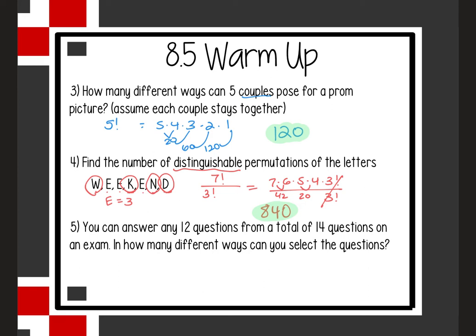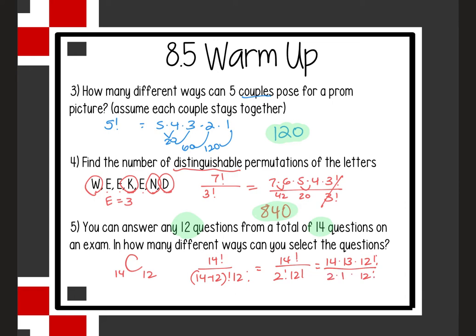Number 5 says: you can answer any 12 questions from a total of 14 questions on an exam. How many different ways can you select the questions? The wording says 'select,' not 'order,' so this is a combination where N = 14 and R = 12. That's 14! over (14−12)! × 12! = 14! over 2! × 12! = (14 × 13 × 12!) over (12! × 2) = (14 × 13) / 2 = 7 × 13 = 91.